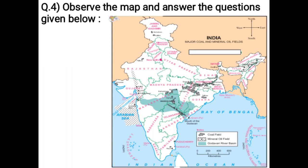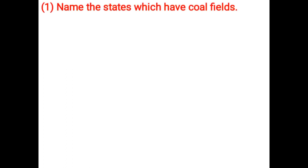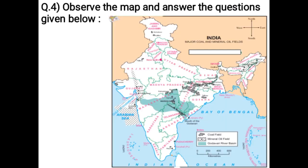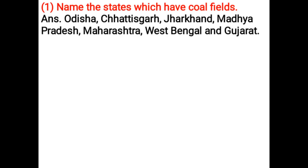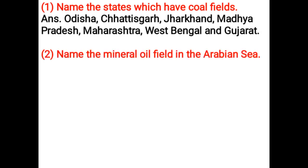Observe the map and answer the questions given below. Name the states which have coal fields. Odisha, Chhattisgarh, Jharkhand, Madhya Pradesh, Maharashtra, West Bengal and Gujarat.